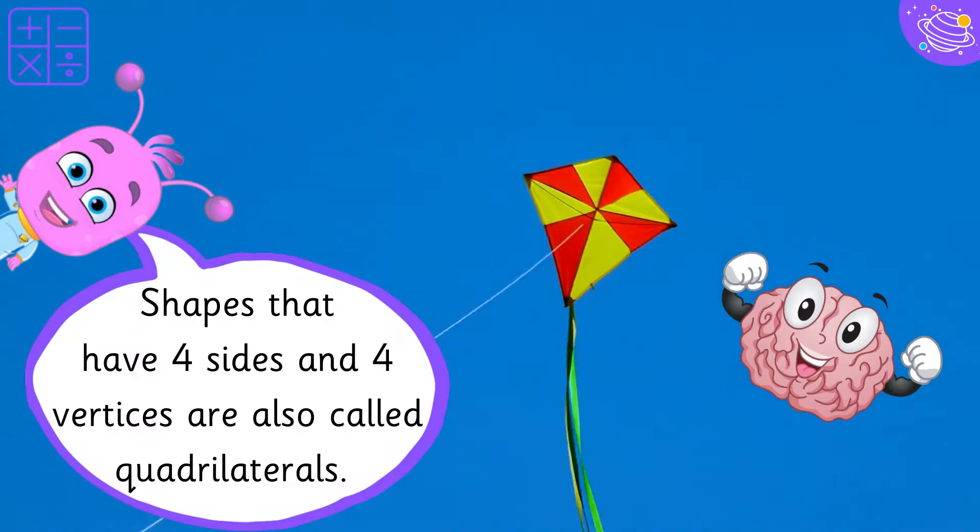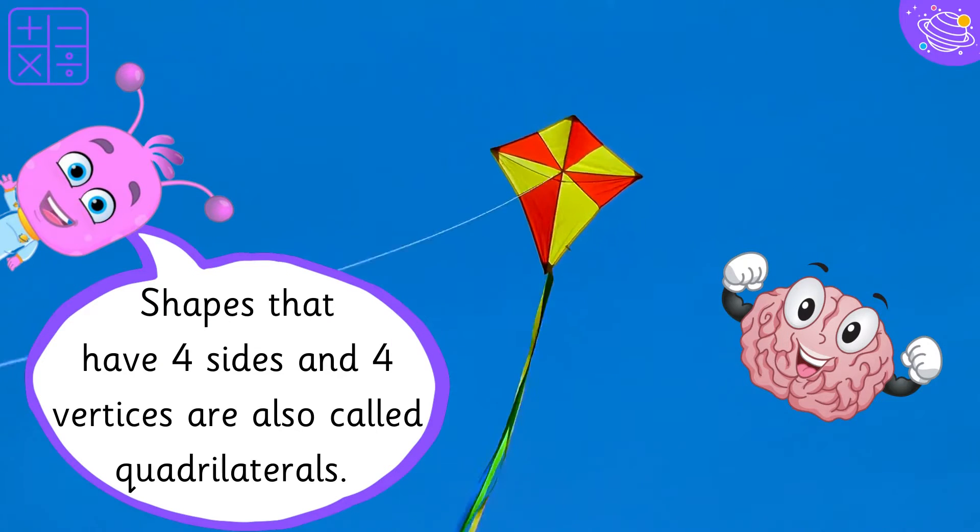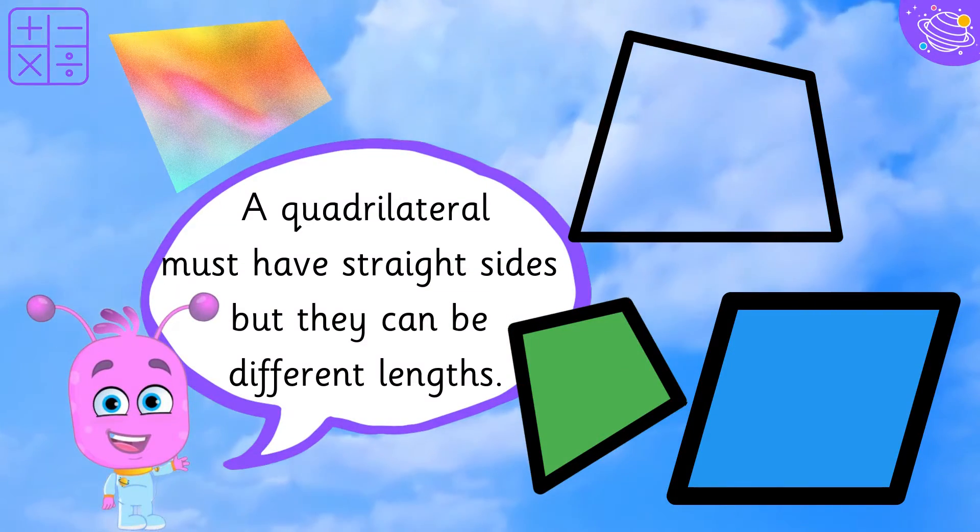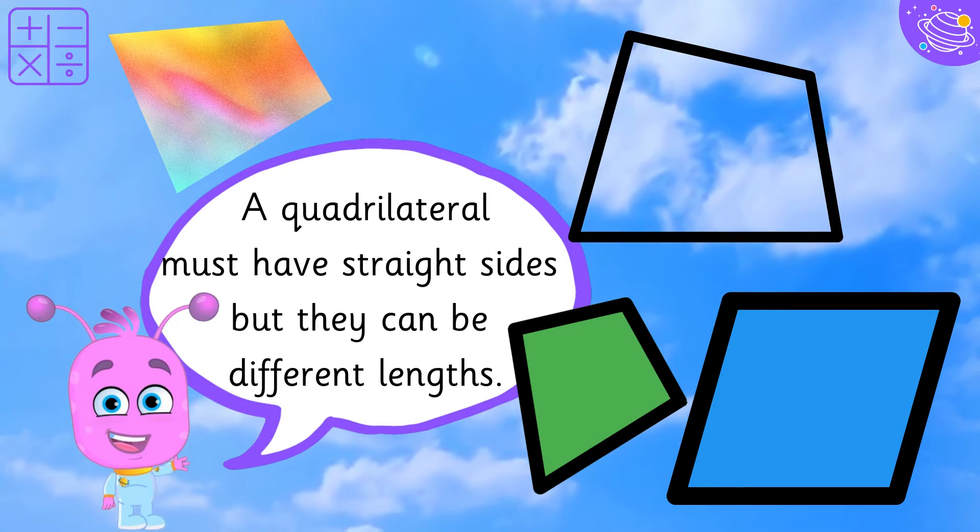Shapes that have 4 sides and 4 vertices are also called quadrilaterals. A quadrilateral must have straight sides, but they can be different lengths.